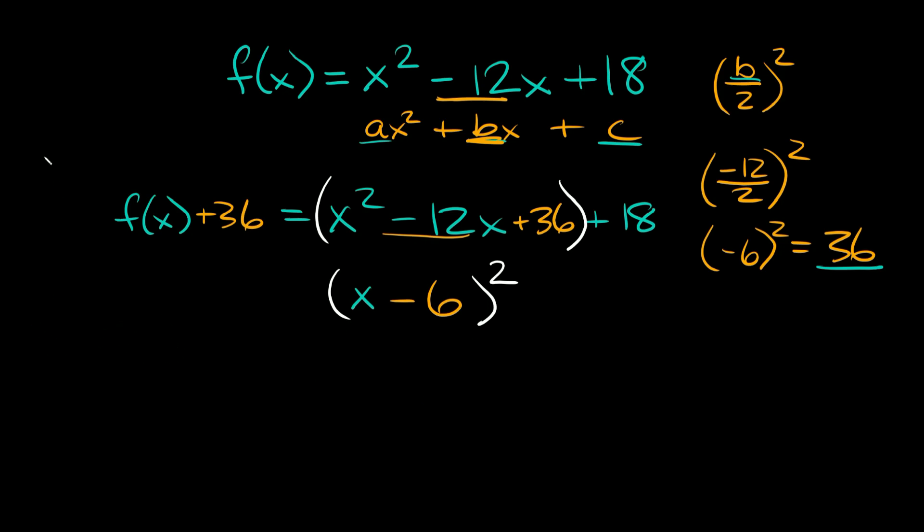Let me clean this up. If I bring everything down, we get f(x) + 36 = (x - 6)² + 18. Lastly, let's get rid of this 36 from this side, so subtract 36 from both sides. Finally we get f(x) = (x - 6)² and 18 - 36 is -18, so f(x) = (x - 6)² - 18.